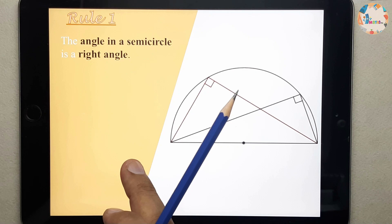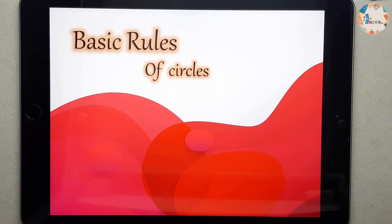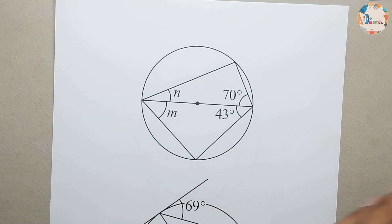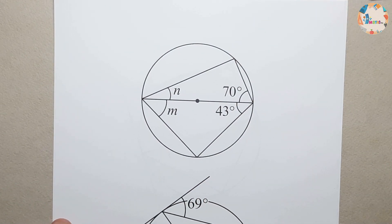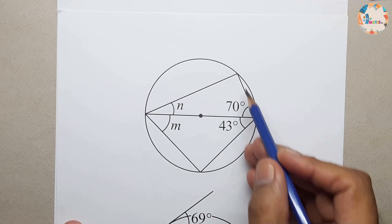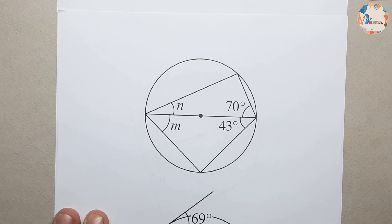So these are the three rules we have gone through. Now we will be going through questions related to these rules and we will practice them using past paper questions. This is the first question we have selected — we can see this is a circle and this angle is in a semicircle.